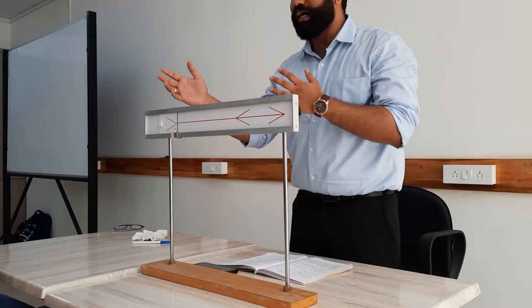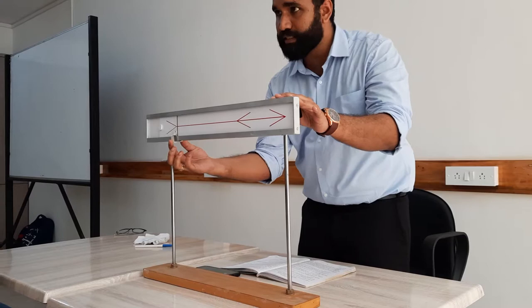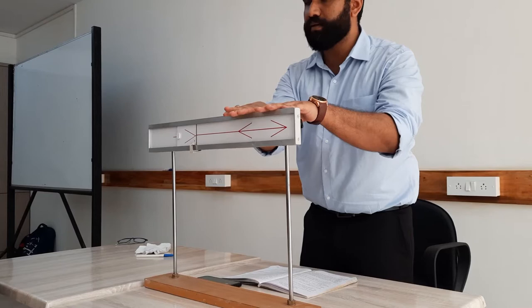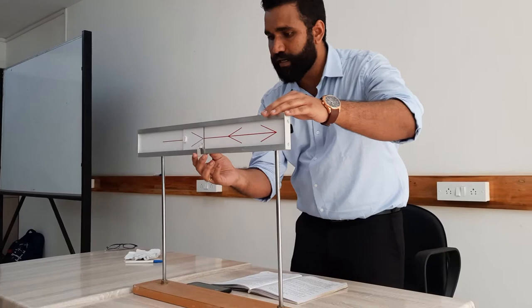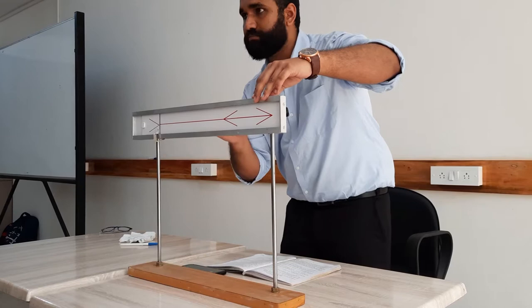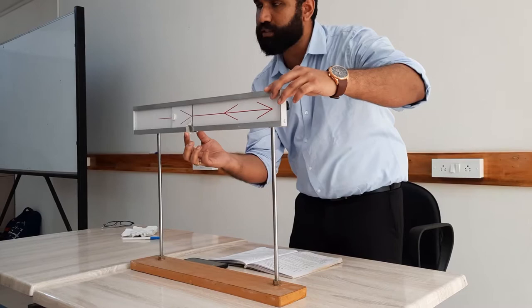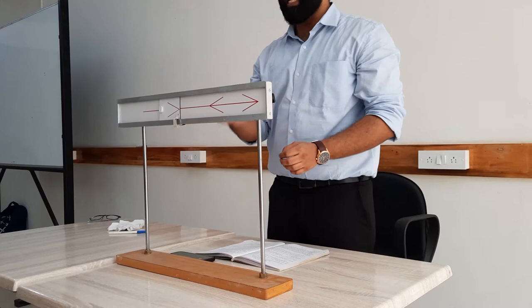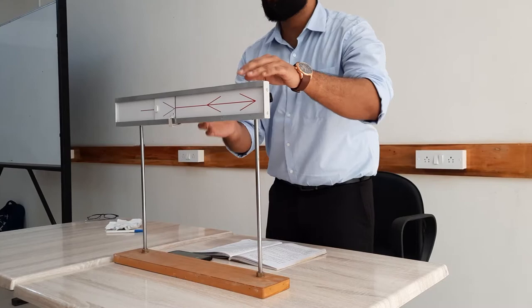Throughout the experiment, the participant — we have Pratyoth here as the participant — will have to manipulate the variable line to match the standard line. There is something called the ascending series, where the line is kept at a shorter length and the participant moves it upward. There is also the descending series, where the line is left at a longer length and the participant has to bring it down to match the standard line.